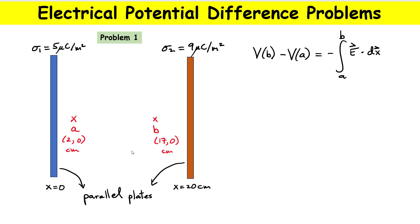This is my expression right here — this is just a definition. The first thing we have to do is write out this scalar product. You're integrating from point A to point B; this is the magnitude of the electric field, which is the total field between those plates, multiplied by the magnitude of the infinitesimal displacement times cosine of the angle between both vectors. That is the definition of a scalar product.